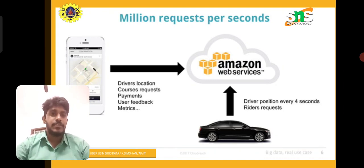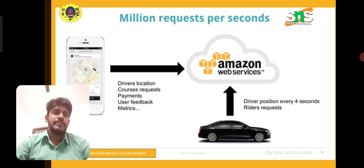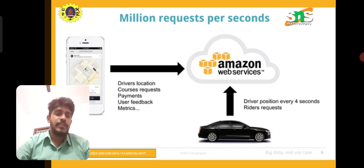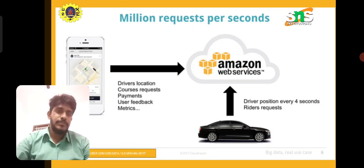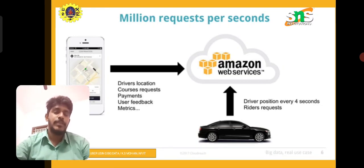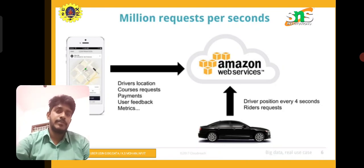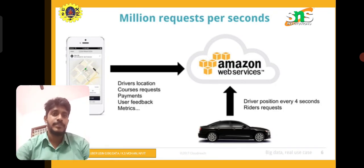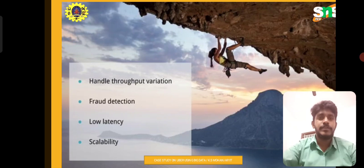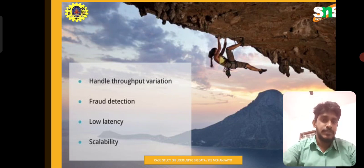The data includes drivers' locations, courses, requests, payments, and user feedback. The driver position is updated every four seconds with a rider request. This kind of data can be managed with the help of Amazon Web Services (AWS). Every four seconds, the rider request is sent to the server, which is handled by AWS. It is incorporated with Uber's main server, cloud storage, and database, so requests can be easily processed by the company and delivered to the customer.